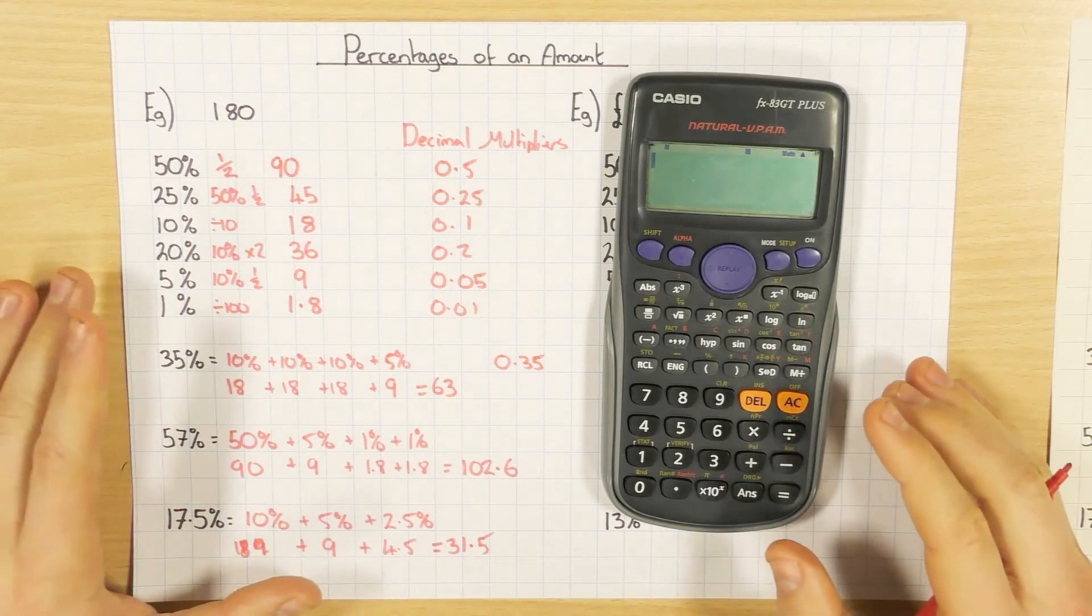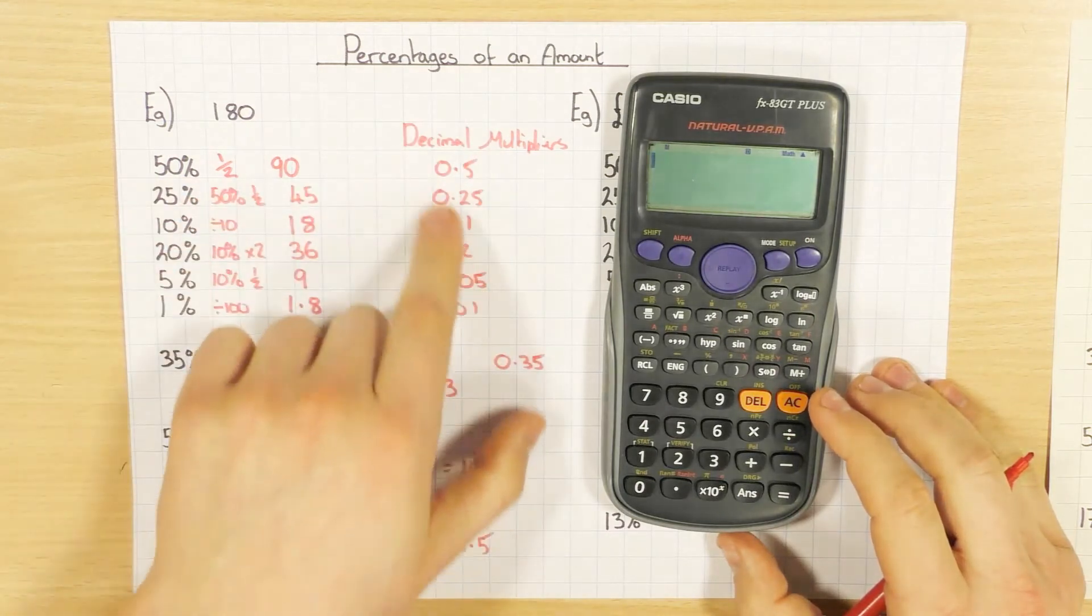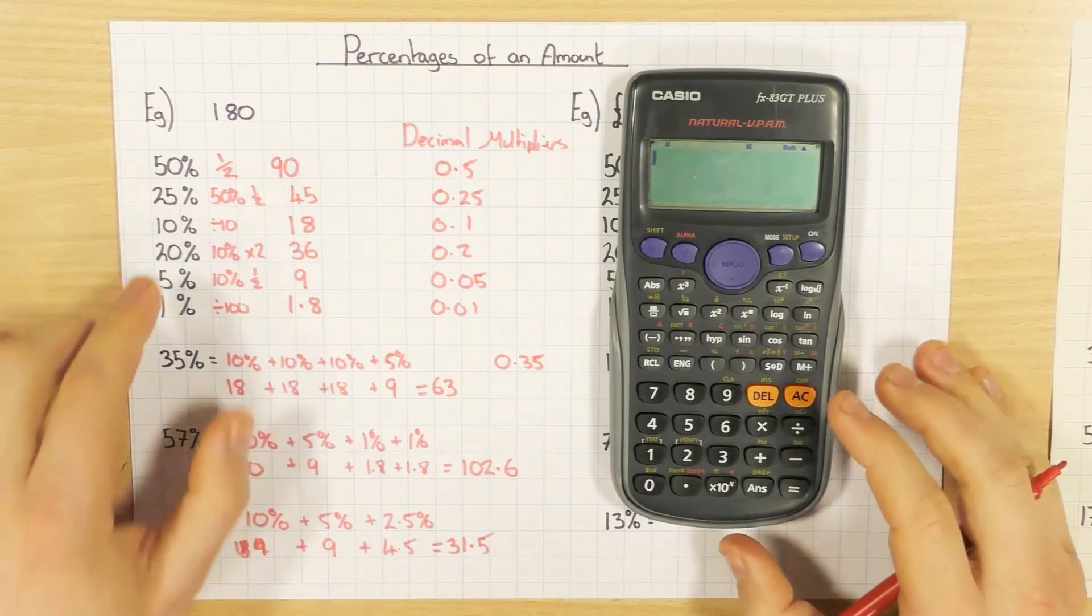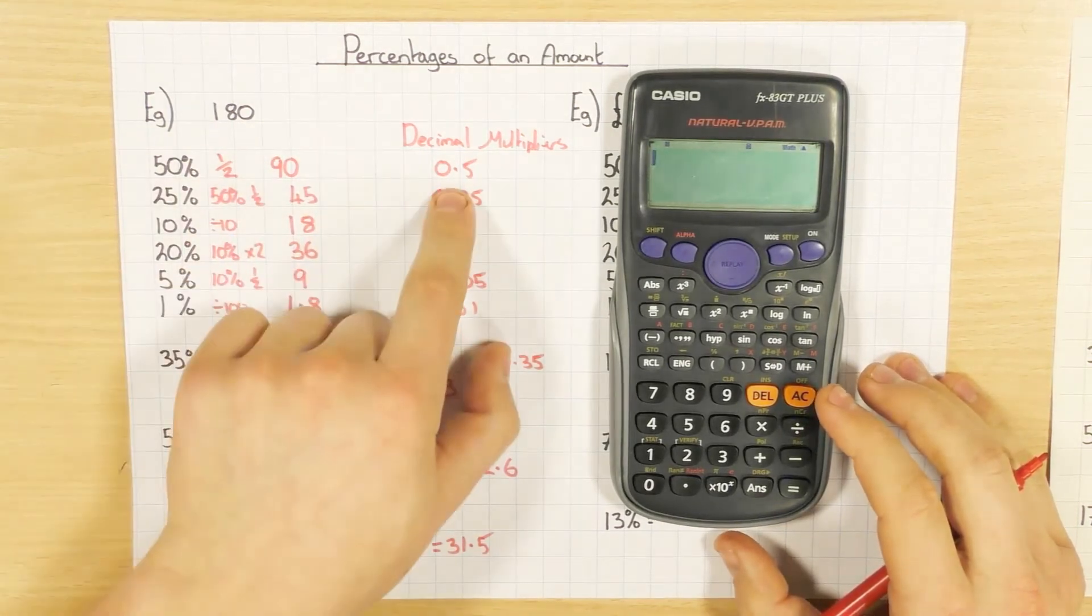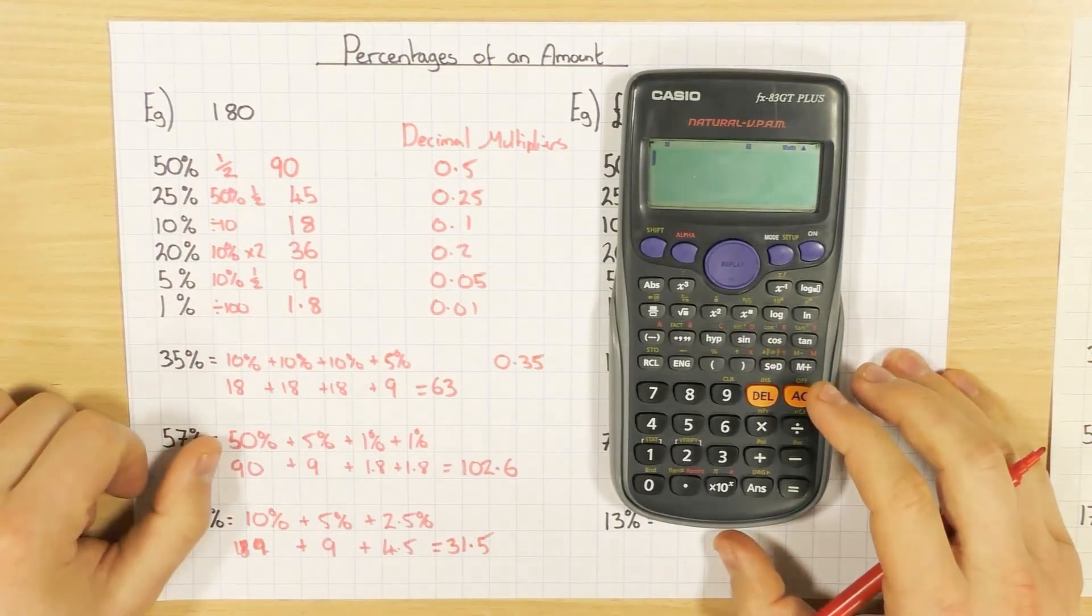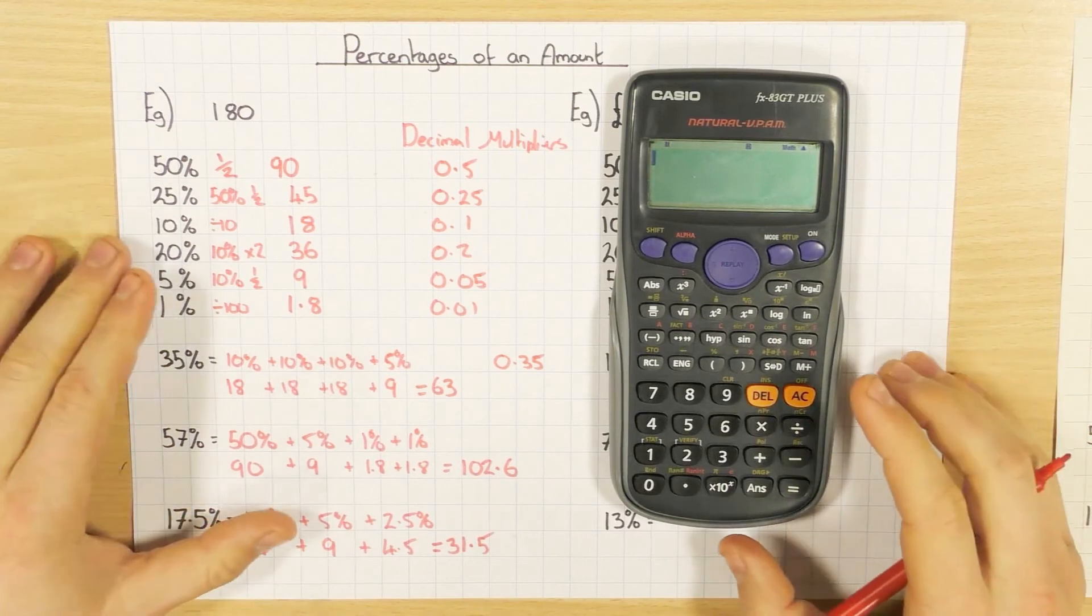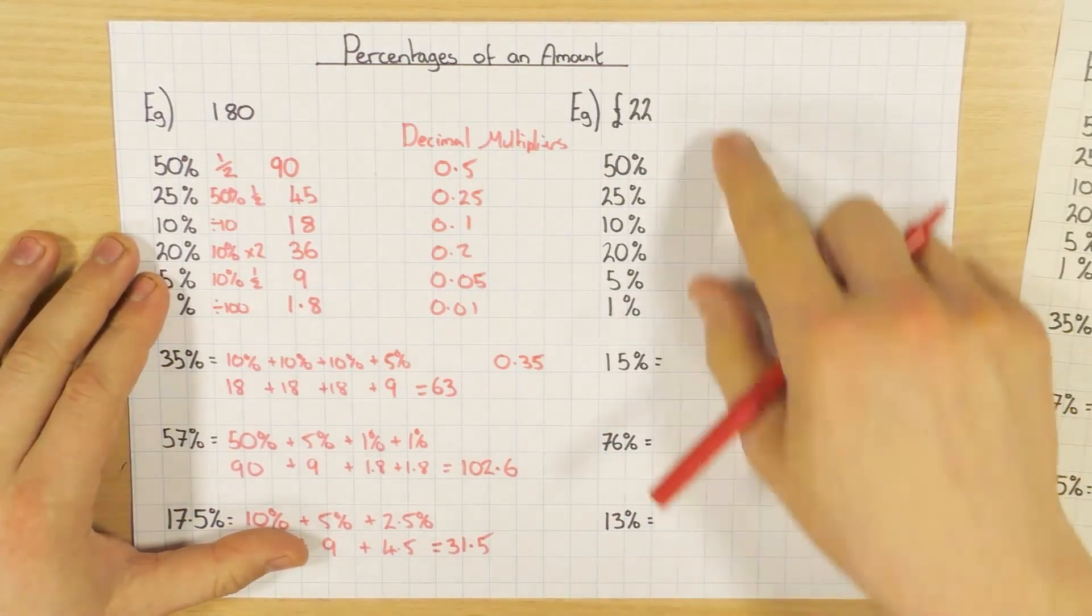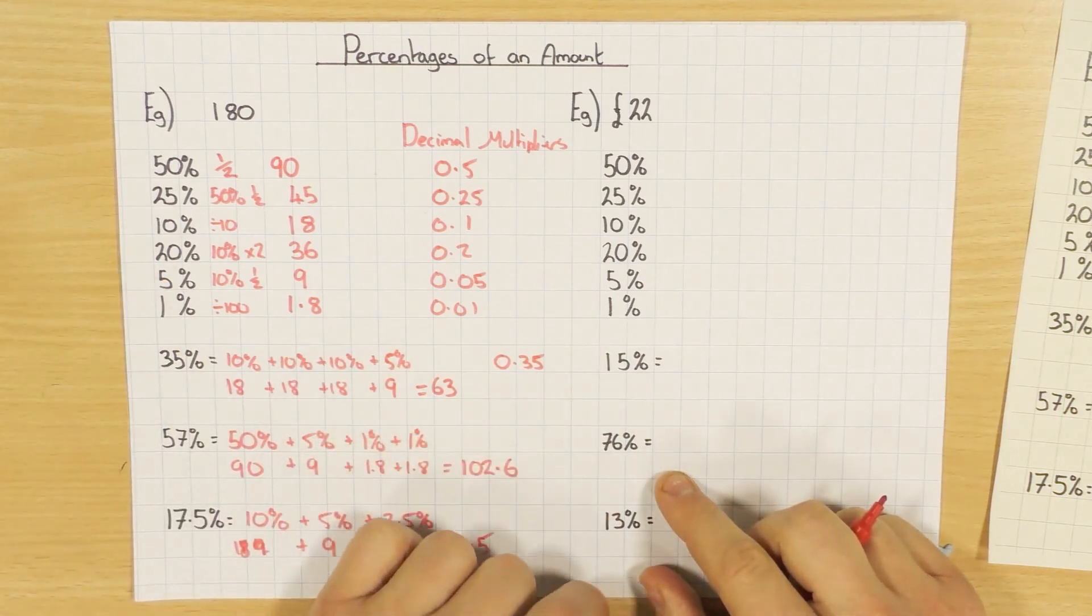So it's just another way of working the percentage, but they do sometimes ask you specific questions based on decimal multipliers. So it's really easy. Whatever the percentage is, convert it to a decimal, and then you obviously times it by the amount, hence the name decimal multipliers. Let's have a look at the next one. Again, I'll go non-calculator and then check these ones on the calculator.